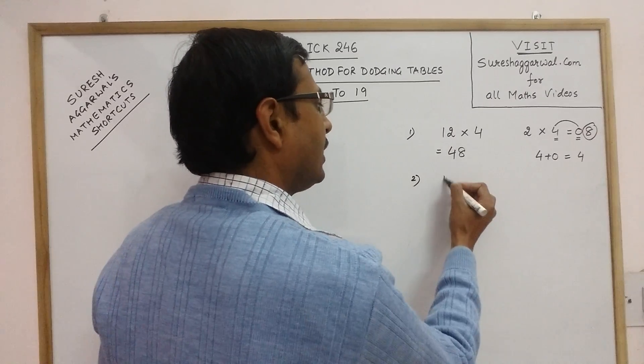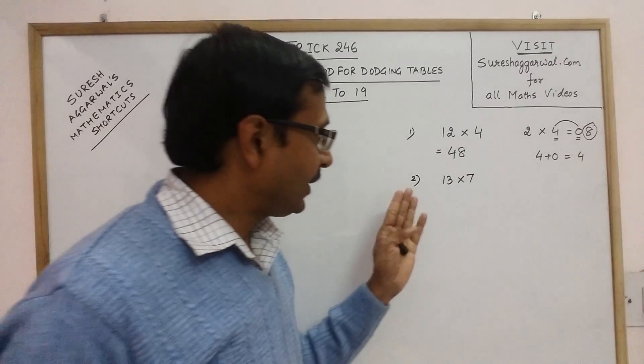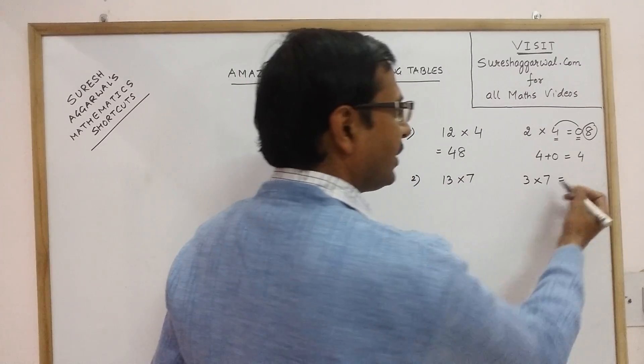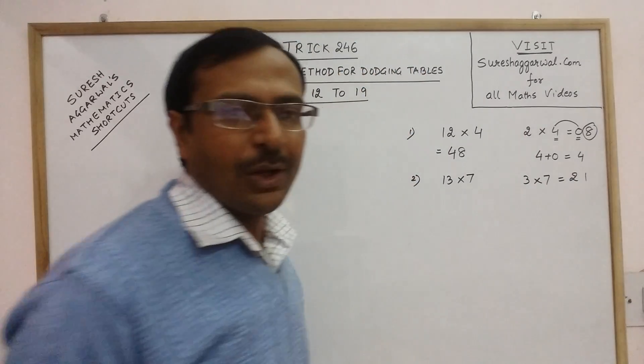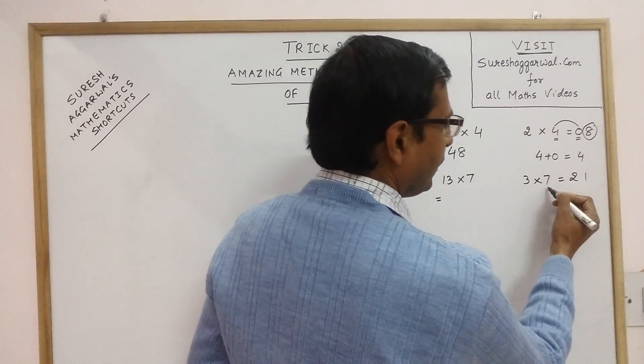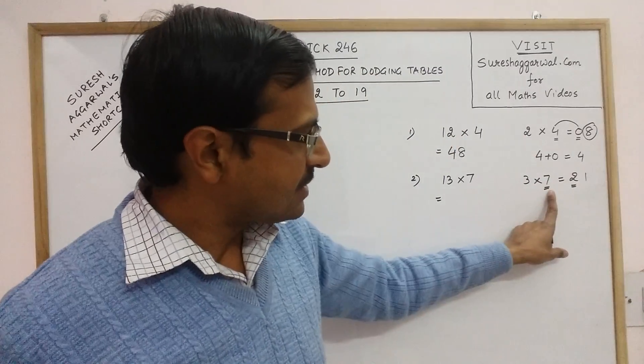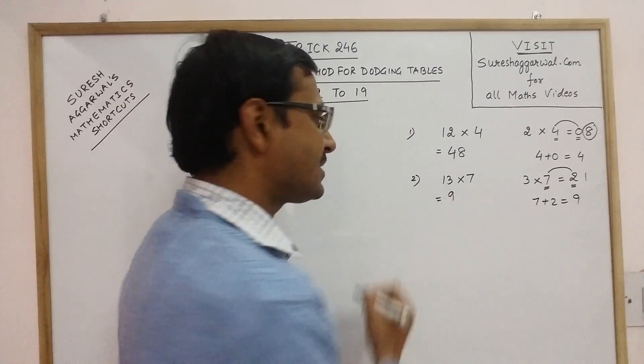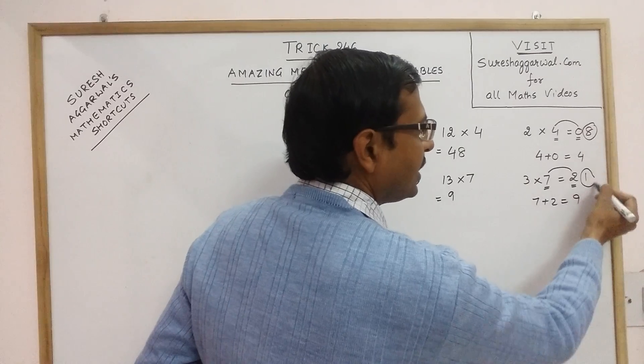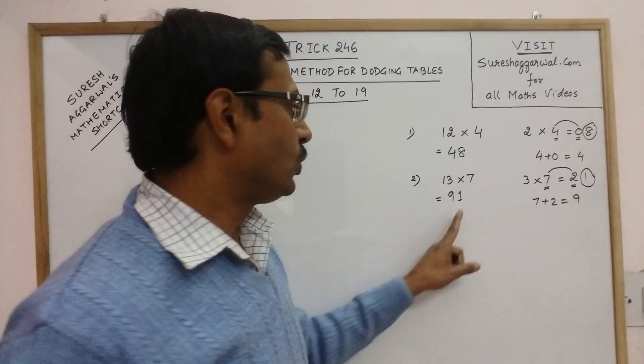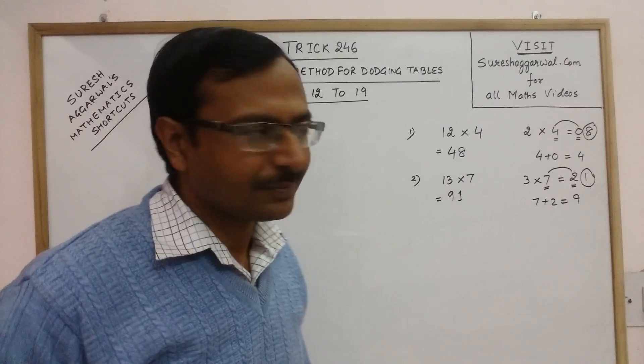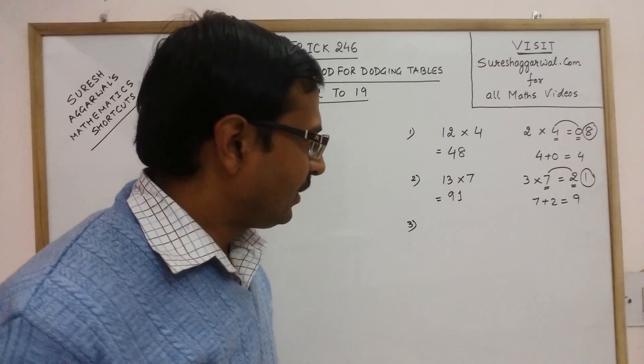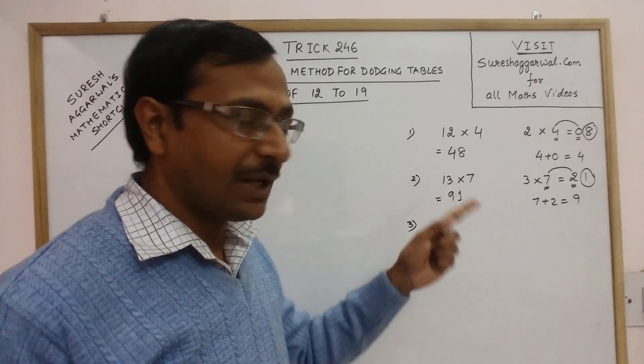Now second example, 13 into 7. Now see they don't need to do 13 into 7. Just do 3 into 7. They know that 3 into 7 is 21. Now in the next step you have the answer. Leave the first and last 7 and 2. So 7 plus 2 is 9. So that gives you 9 as the first digit. And what is the last digit here? 1. So that is the unit's place of the product. 13 into 7 is 91. The beauty of this method is that answer will never be wrong. And students do not have to recite the table of 13 right from the beginning.